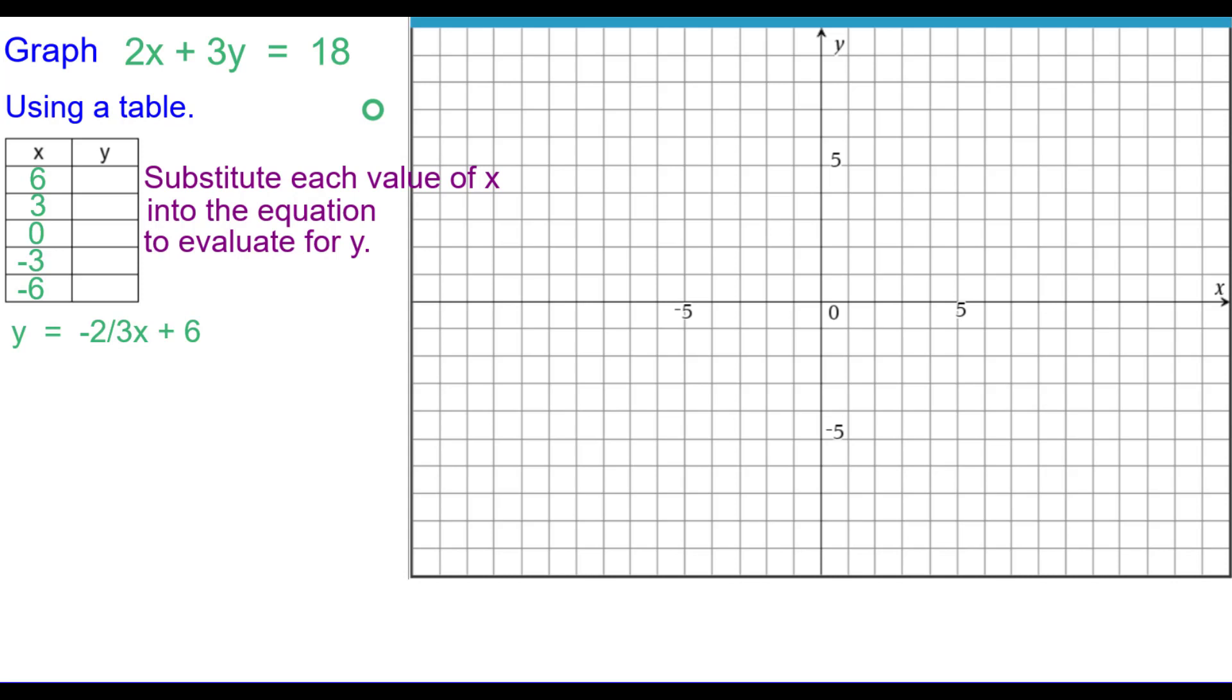We're going to substitute each value of X into the equation to evaluate for Y. For example, when I put in positive 6, we've got Y equals negative 2 thirds times that positive 6 plus 6. And then we have to go ahead and simplify that expression. So we're showing each step here. If you need to check any of those steps, press pause as needed. So we put in Y equals 2 and we can then plot 6 comma 2. That's the first point on our graph.